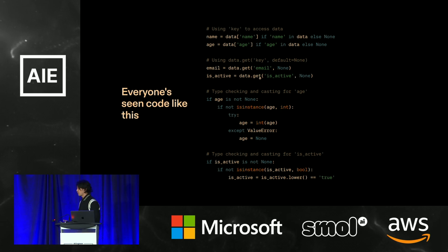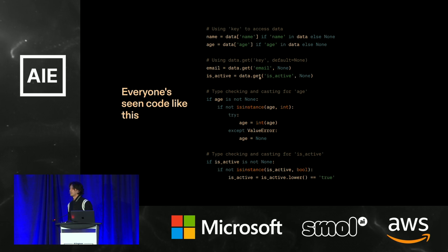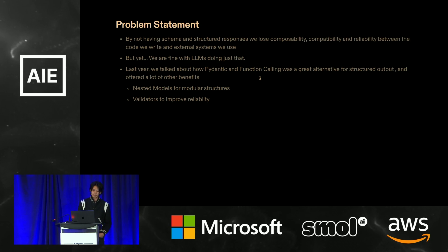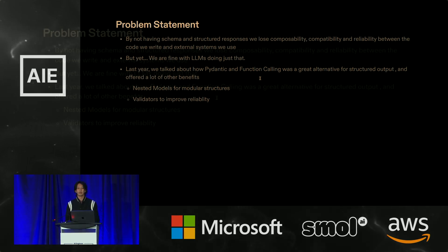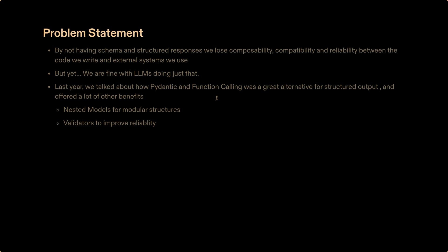There are a lot of good tools in the Python ecosystem, and in ecosystems across all these languages — whether it's Ecto in Elixir, Active Record, or anything like that — that can make our lives much easier. The problem is that by not having schemas and structured responses, we tend to lose compatibility, composability, and reliability when we build tools and write code that interact with external systems.